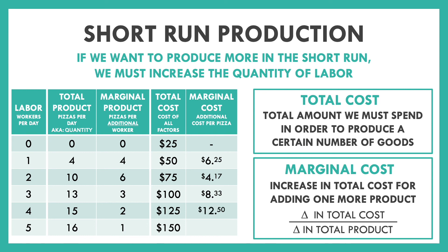With this last one, going from four workers up to five workers, by hiring a fifth worker we only get one more pizza, but we had to pay $25 to hire that worker. So our additional cost for that 16th pizza — going from 15 up to 16 — is $25. So again, marginal cost is just the change in total cost divided by the change in total product. There'll be another extra video that helps walk through marginal cost, since we know this can be a tricky topic.